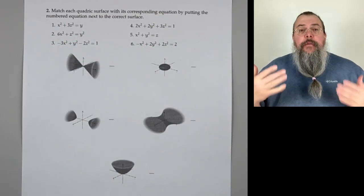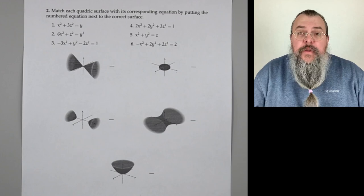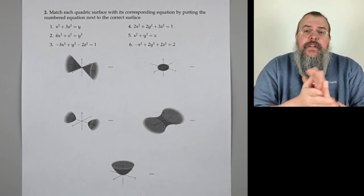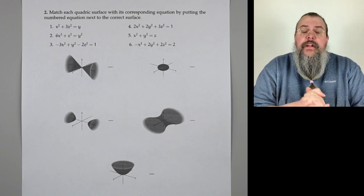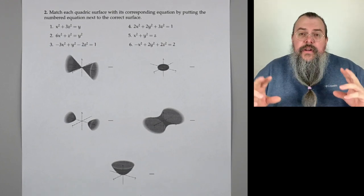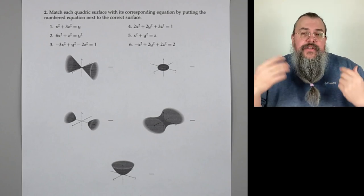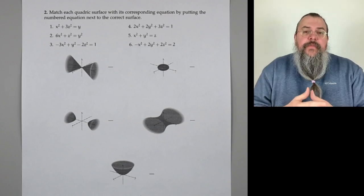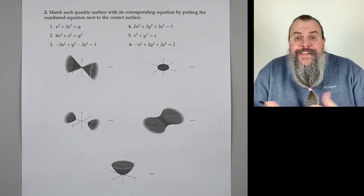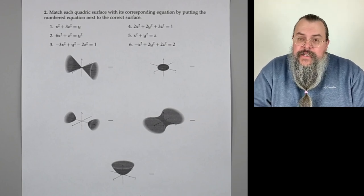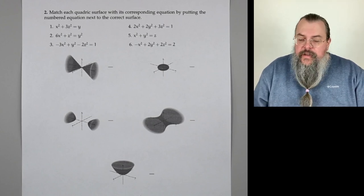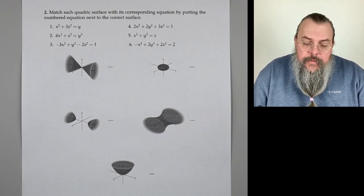Number two: match each quadric surface with its corresponding equation by putting the equation number next to the correct surface. It's just a pure matching problem — no need to justify things; you either get it right or you don't. So it's good to say, okay, what are these shapes? That helps a lot.